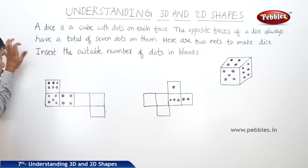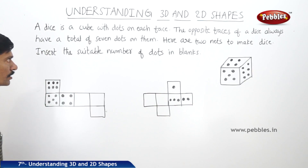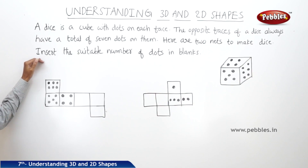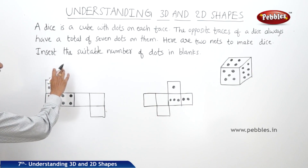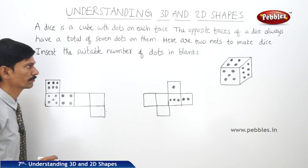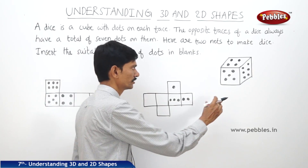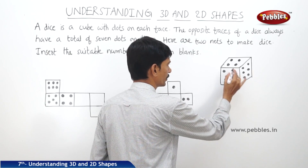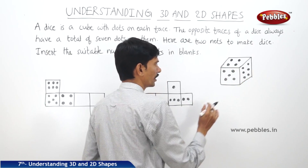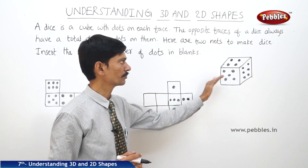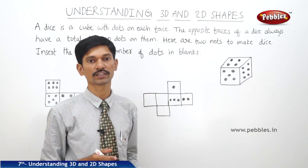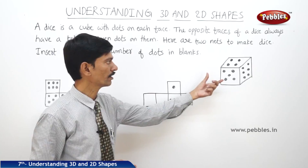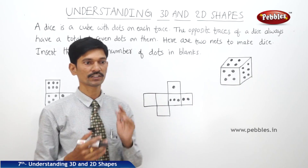Now let us solve the next question. A dice is a cube with dots on each face. The opposite faces of a dice always have a total of seven dots on them. Here are two nets to make dice. Insert the suitable number of dots in the blanks. If there is a dice, the dots will be given on each face, and the sum of the dots on the opposite faces must be seven.